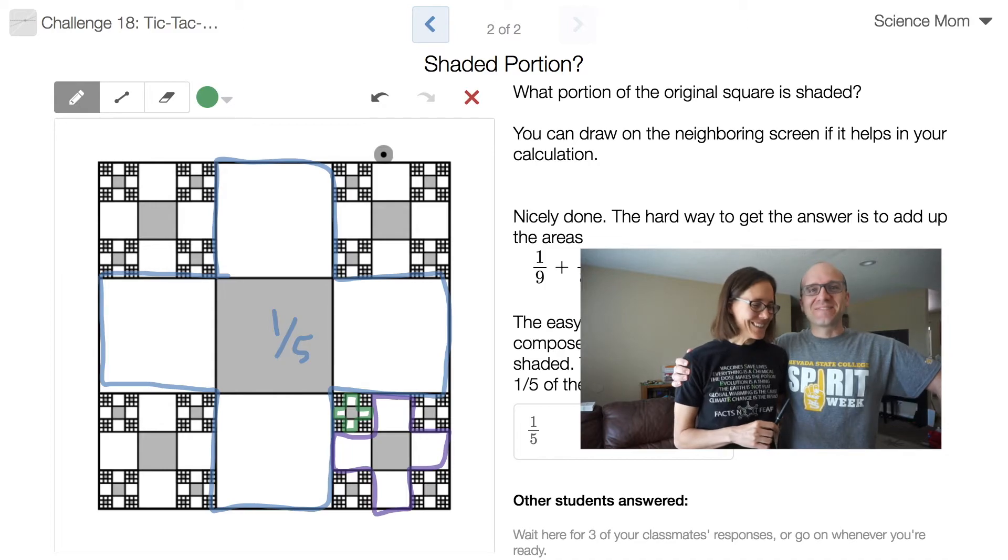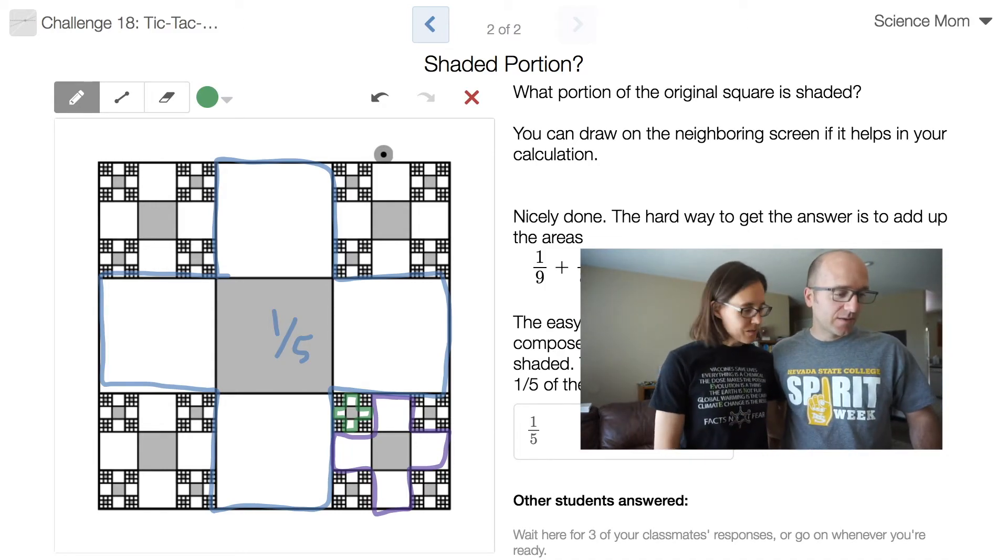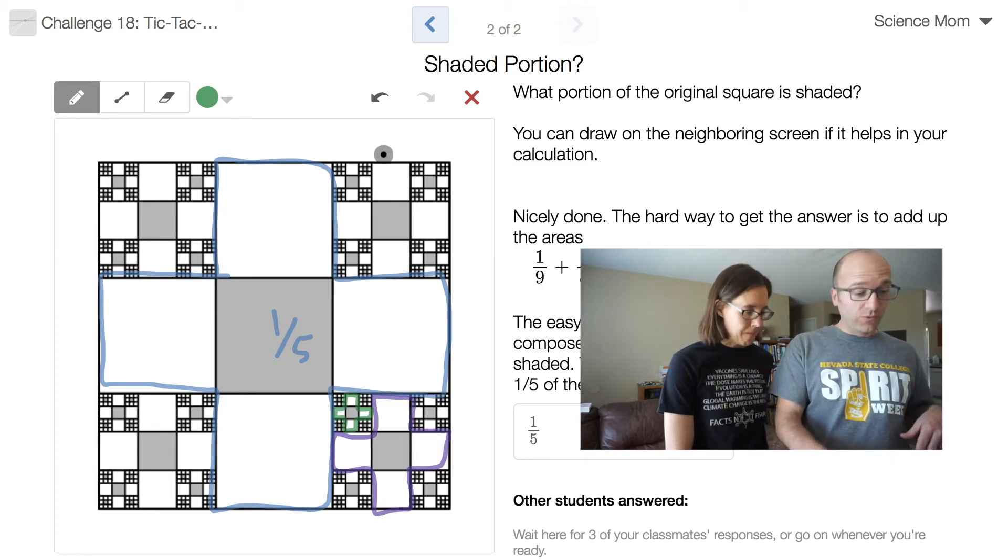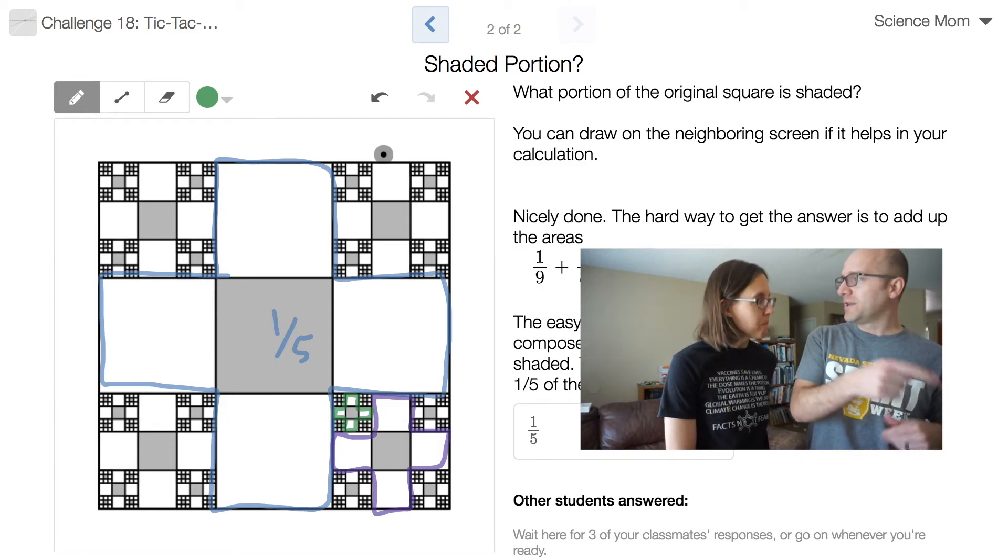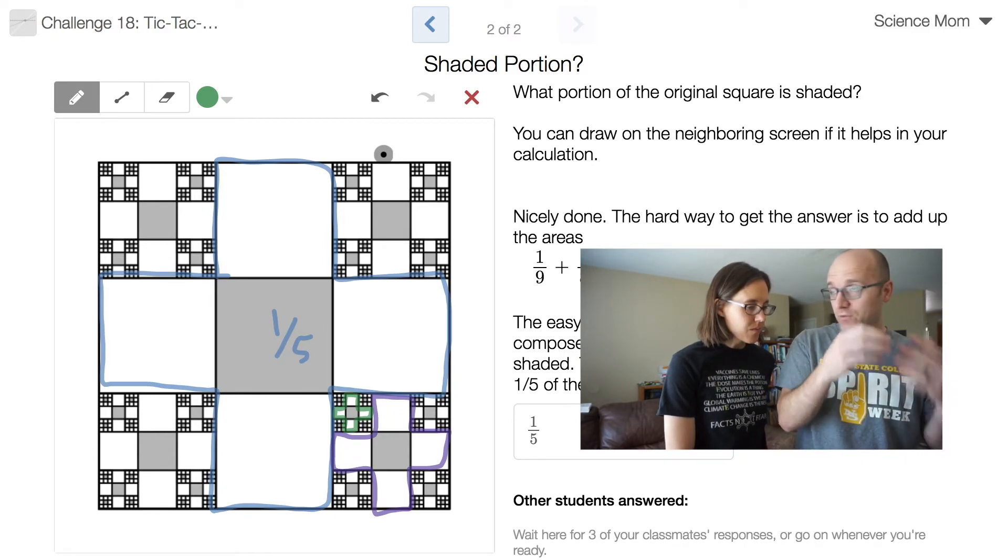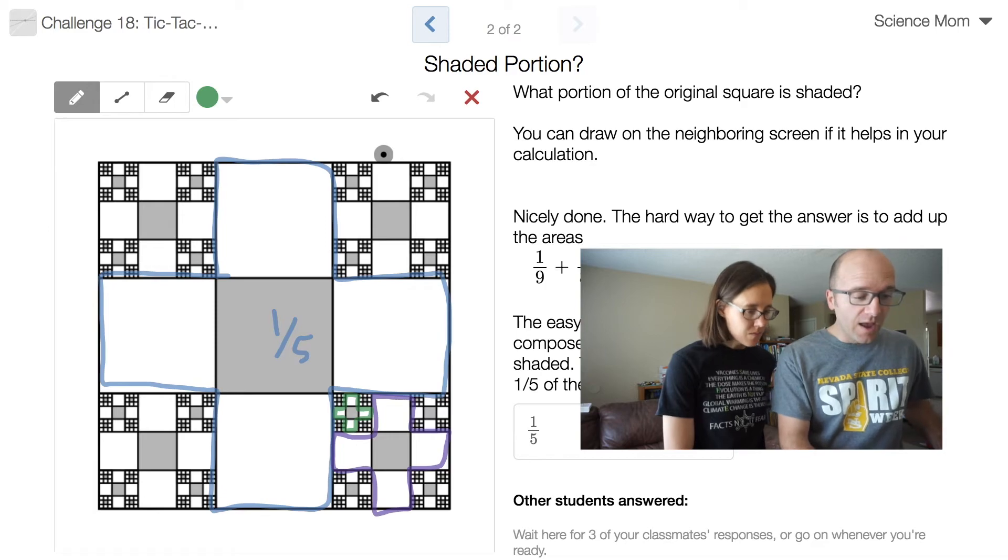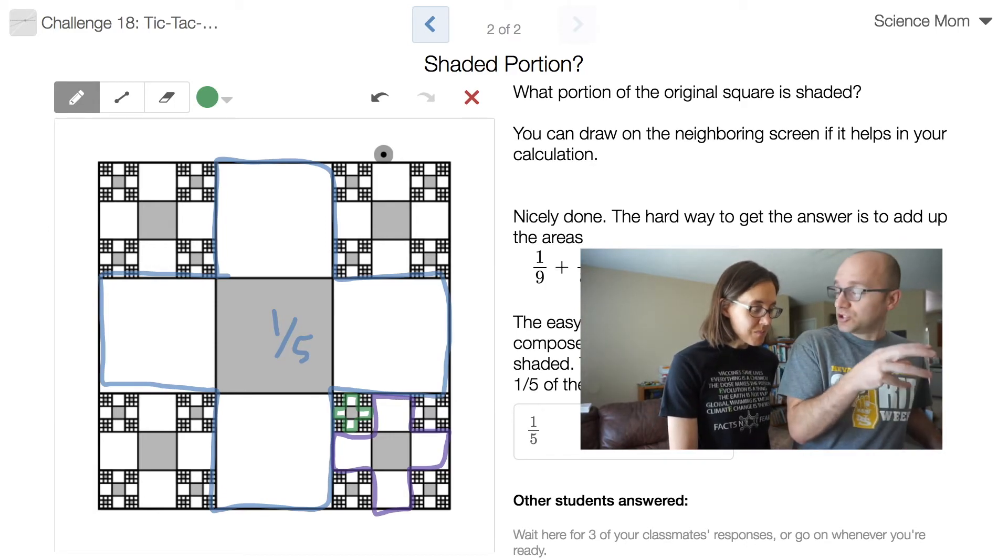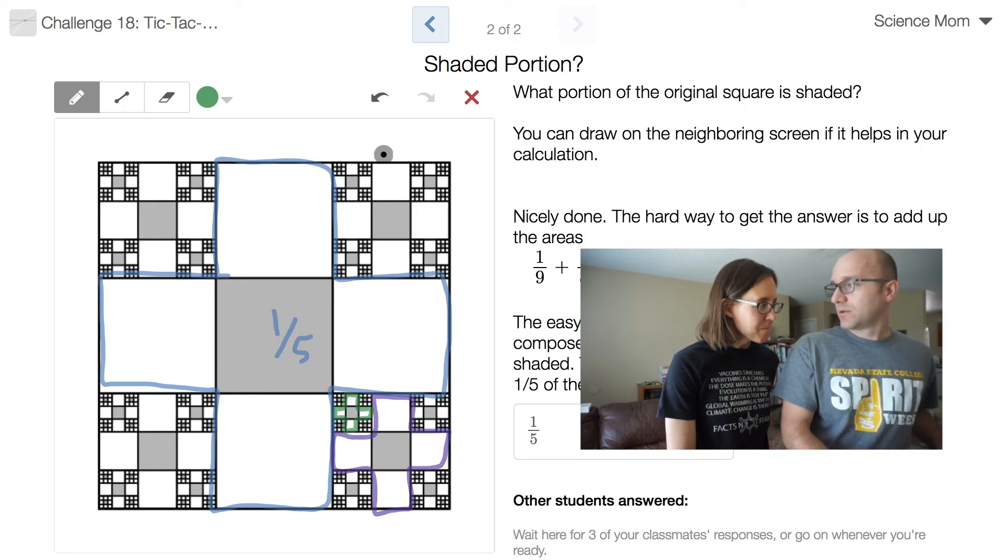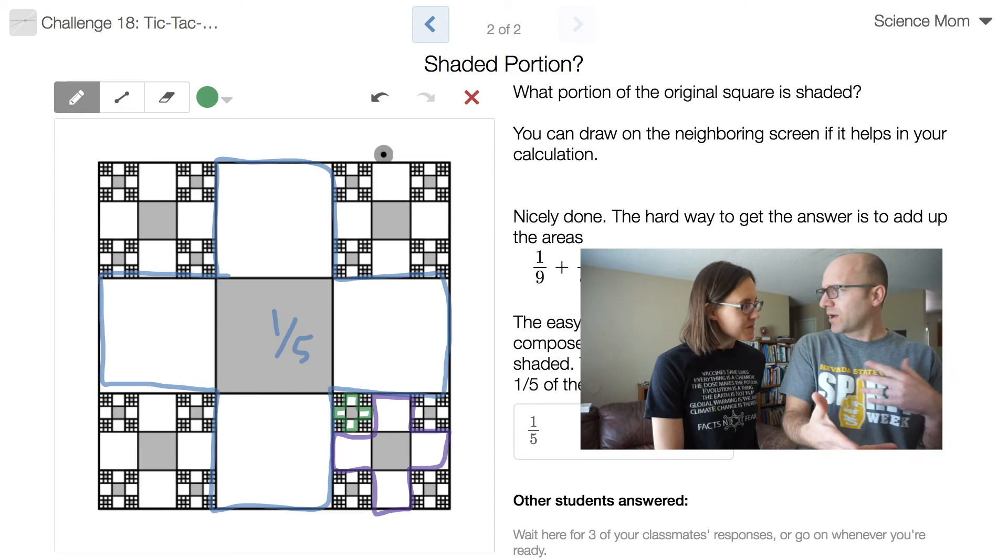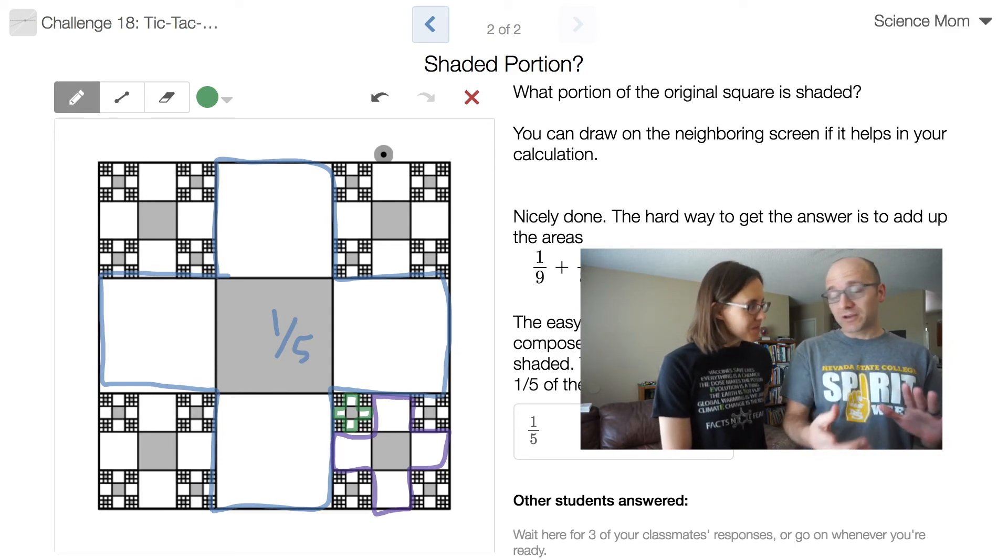Nicely done, Science Mom. Anything you want to add about this problem? Well, just like you said, there is a harder way to do this. We really could say this initial square is one ninth. And then the next four, we'll make it four eighty-firsts of the entire figure. And there's a good formula for adding up geometric series. Well, it's not actually that complicated. Maybe we got to do a video one of these days to show you how simple that formula actually is.